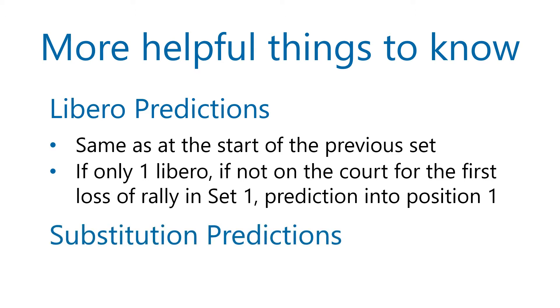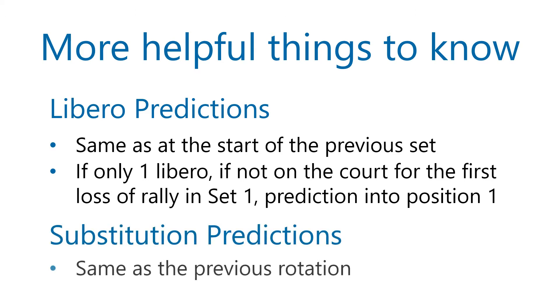For substitution predictions, VolleyWrite always looks to the previous rotation, even if that's from the previous set. So if you don't do a regular sub at the end of a set, you won't see the prediction during the first rotation of the next set.